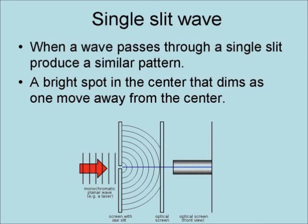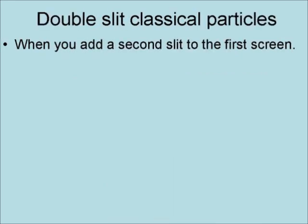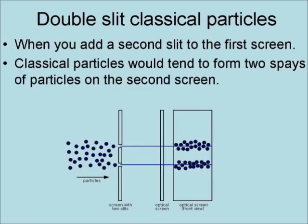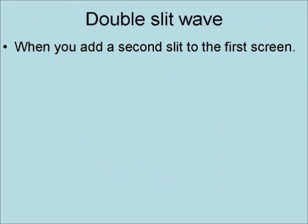That is, a bright spot in the center that dims as one moves away from the center. When you add a second slit to the first screen, classical particles would tend to form two sprays of particles on the second screen.